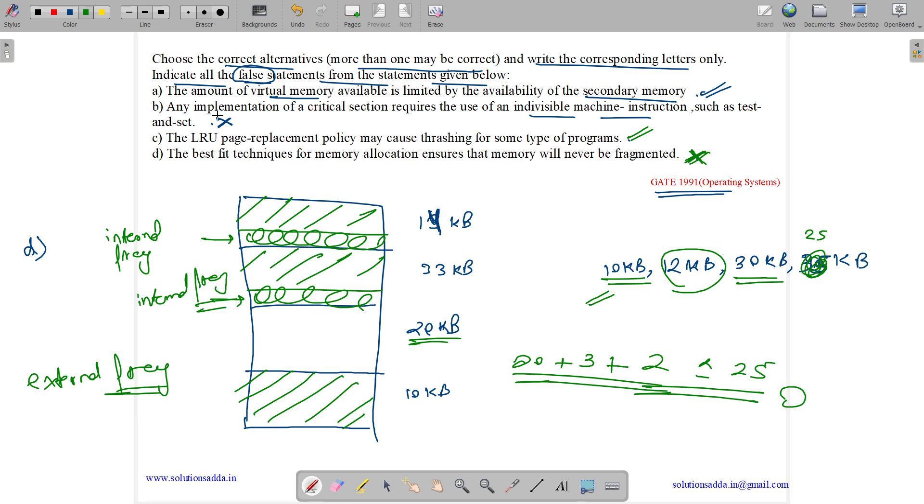So we need to tell which all are false. So the false statements are B and D. So answer is B and D.